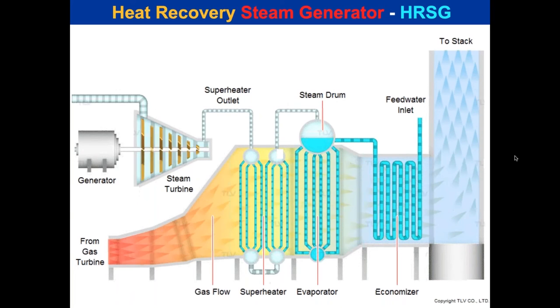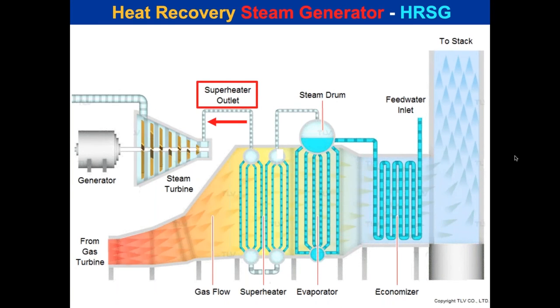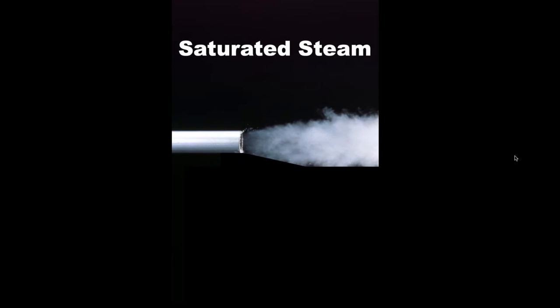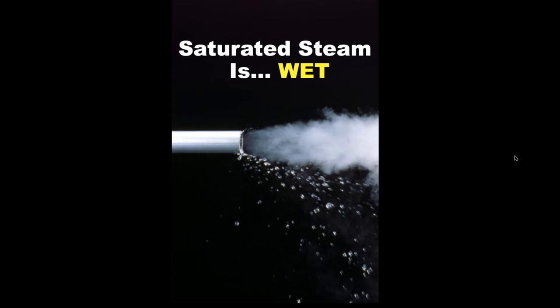A lot of you have what you call saturated steam, but you don't actually have saturated steam — never. What you have is wet steam. Steam leaves the boiler three to five percent wet. By the time it travels through your system, all of your steam, if it is not superheated, is wet steam at saturation temperature.